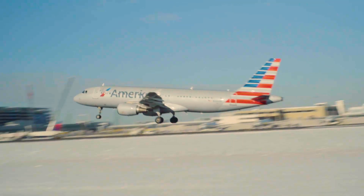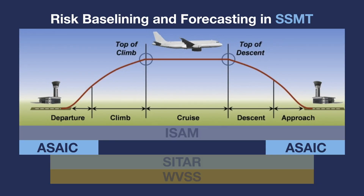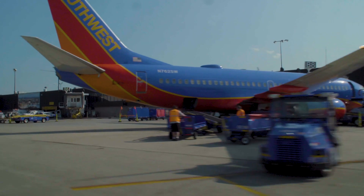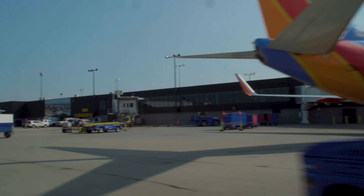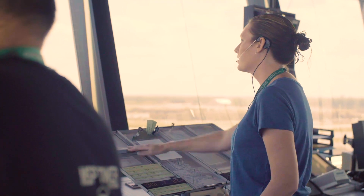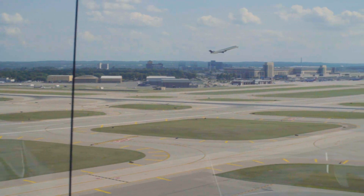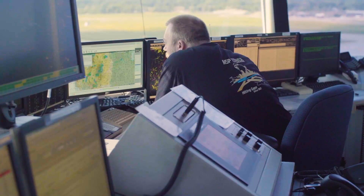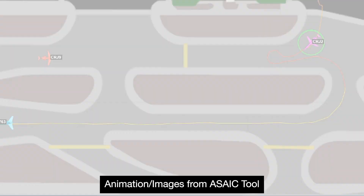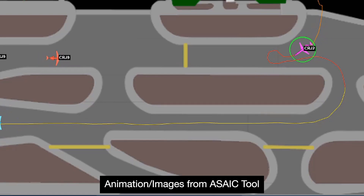Today's presentation highlights SSMT's Airport Surface Anomaly Investigation Capability, or ASAIC, tool. ASAIC allows accident investigators, runway and airspace designers, and air traffic controllers to monitor and review safety-related events up to 60 nautical miles outside of airports that have airport surface detection equipment, Model X, or ASDX, and airport surface surveillance capability, or ASSC, data sensors.